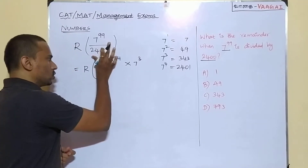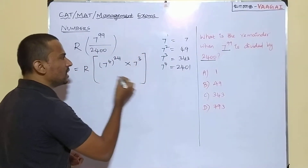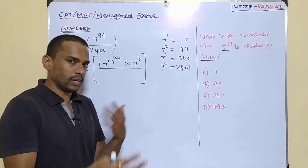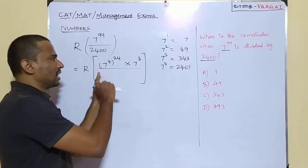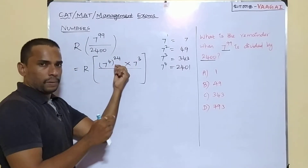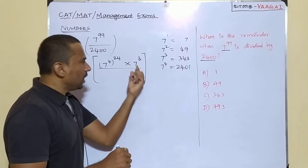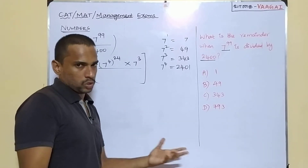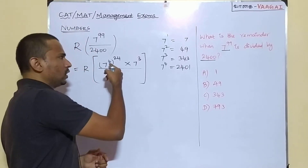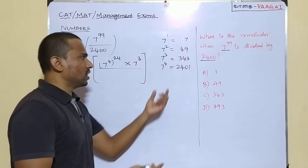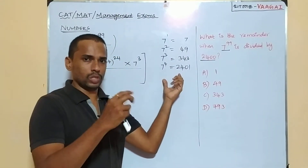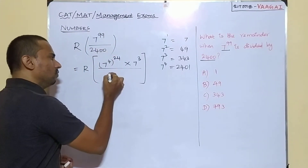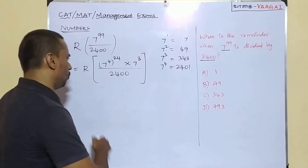I hope you're able to understand this. Let me rewrite it clearly. I am rewriting 7 power 99 as: 7 power 4 to the power 24, which gives 7 power 96, multiplied by 7 power 3, so that you get 7 power 99 itself. The reason I'm writing it this way is because 7 power 4 gives us 2401, which is the key. This whole expression is divided by 2400.